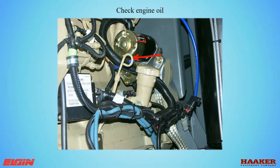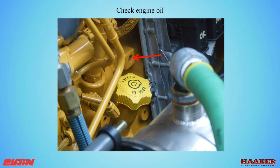On the John Deere Tier 4, the dipstick is part of the oil fill spout. The North American oil spec is shown on the cap — only use API CJ-4 low ash oil. Any Tier 4 engine uses low ash oil only. Using the wrong oil can cause plugging of the diesel particulate filter.